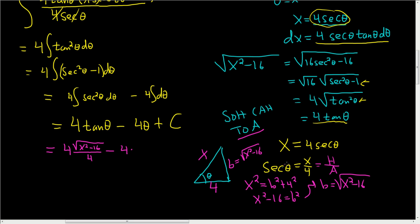Now we know that the secant of theta equals x over 4. So the arc secant takes x over 4 and gives us back theta. So theta is arc secant of x over 4, and we still have the plus C.